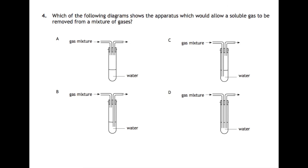Question four: which of the following diagrams shows apparatus which would allow a soluble gas to be removed from a mixture of gases? In option A, gas is coming in and going out and it's not going into the water, so that's not going to allow it to dissolve. In B, the going out tube is within the water, so that won't help. This one here, C, we've got gas going in and the tube is going right down into the water, which means the gas is going to bubble through and anything that's soluble can dissolve and everything else will bubble out. So C is your answer.